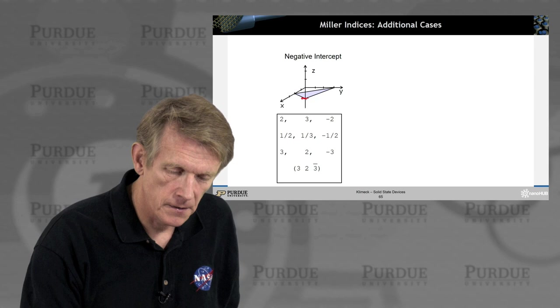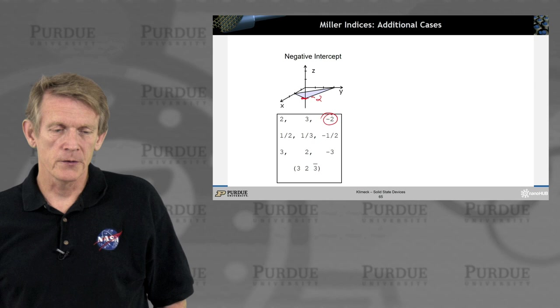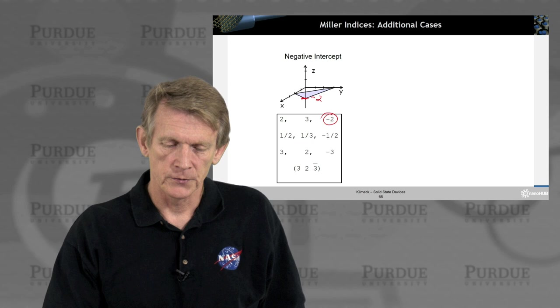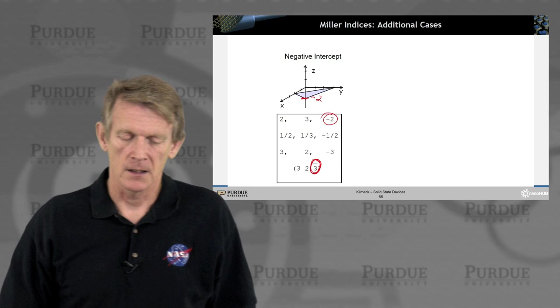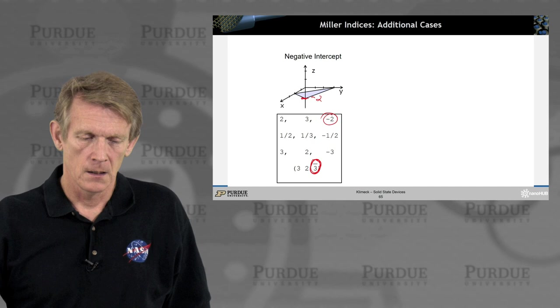You could have a negative intercept. In this case here, the z is at minus 2. So here we go. But then you follow the same nomenclature. You normalize by the most common denominator. In this case, again, 6. And you end up again with 2, 3, minus 3. And the nomenclature in the literature and with crystallographers is that you put the minus sign on top.